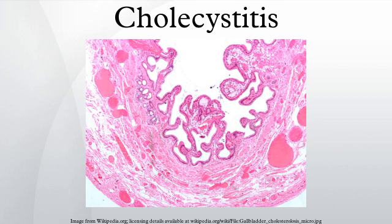The majority of cases of cholecystitis are caused by gallstones impacting or impinging on the flow of bile in the biliary tree. Gallstone impaction, called cholelithiasis, most commonly occurs at the neck of the gallbladder or in the cystic duct. This leads to inspissation of bile, bile stasis, and secondary infection by gut organisms, predominantly E. coli and Bacteroides species.